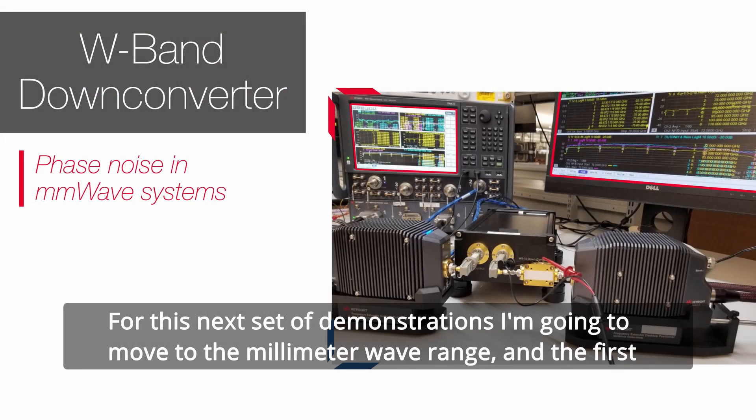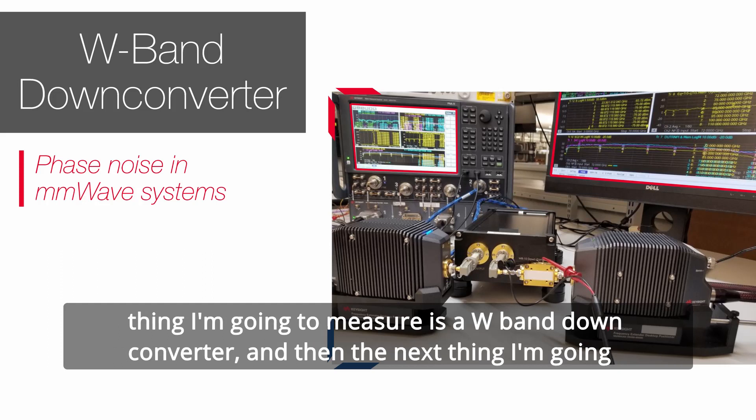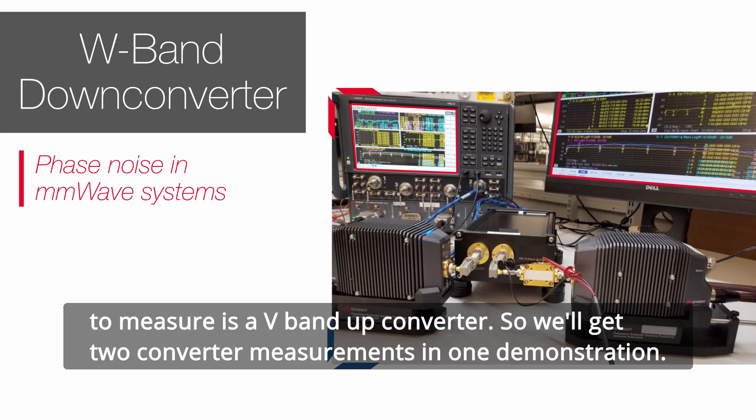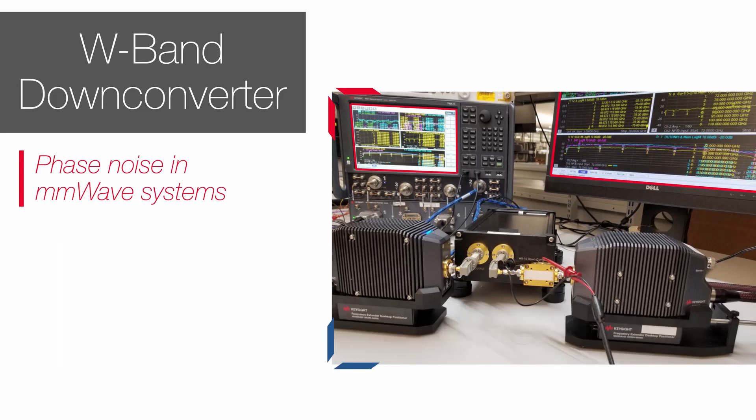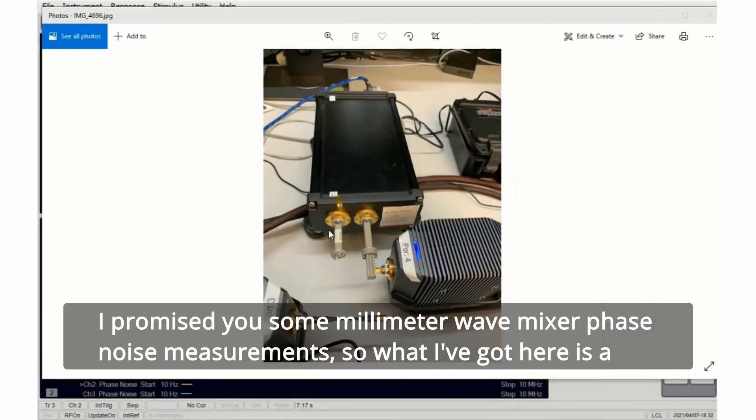For this next set of demonstrations I'm going to move to the millimeter wave range. The first thing I'm going to measure is a W band down converter and then the next thing I'm going to measure is a V band up converter, so we'll get two converter measurements in one demonstration. I promised you some millimeter wave mixer phase noise measurement.